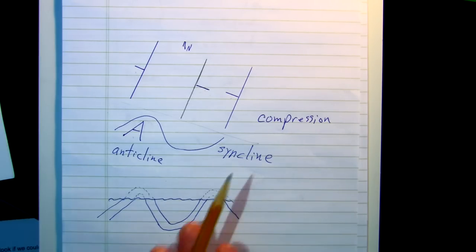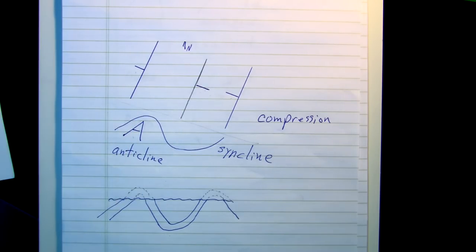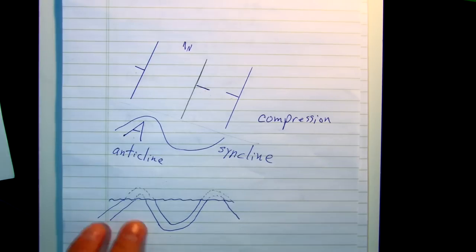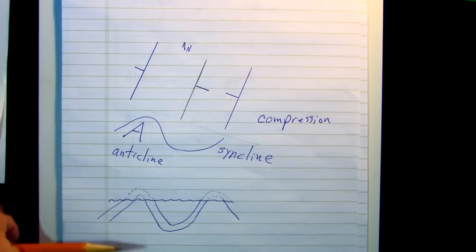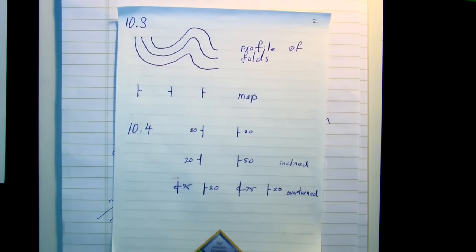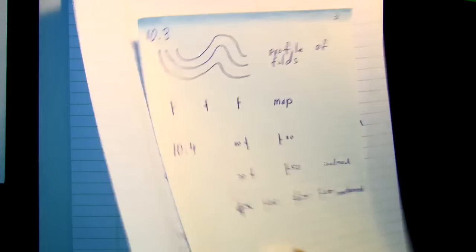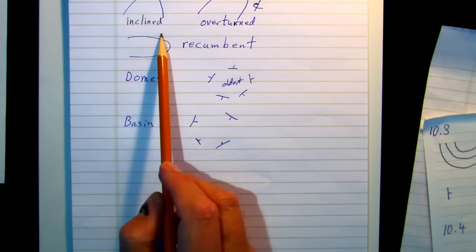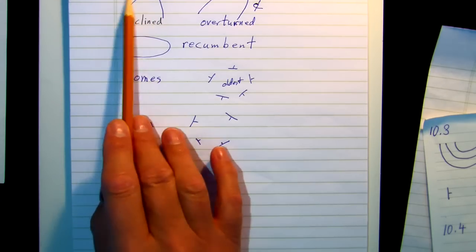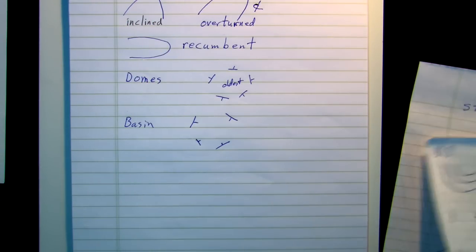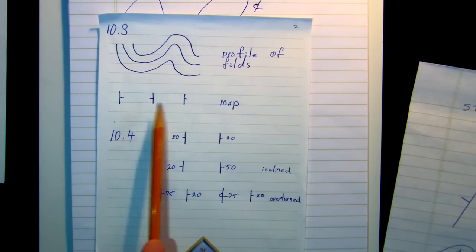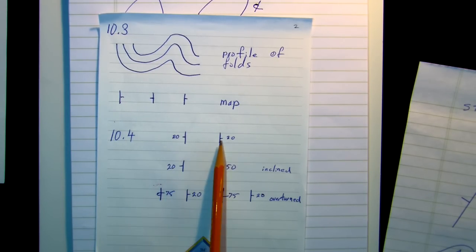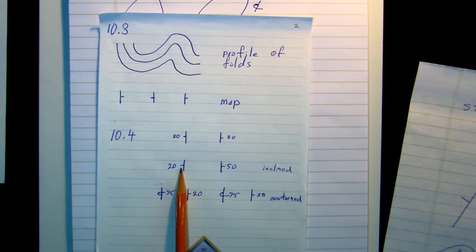Now, folds can be upright just like I've drawn these where they're parallel. However, they may also be inclined. Here's an example. This one's been inclined. Here's where they're parallel to one another, both dipping at 20 degrees. Here, this one is dipping at 20, but this one is dipping at 50. This is inclined.